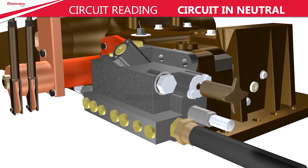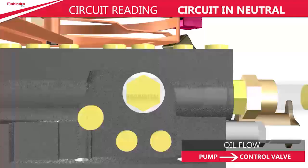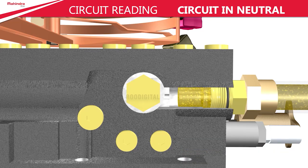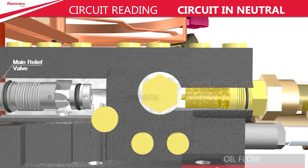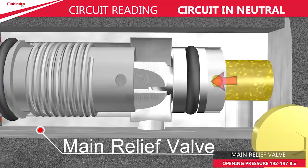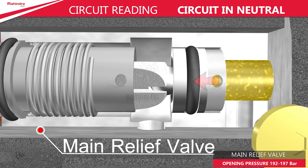In this circuit, the oil starts to flow from the pump to the control valve with negligible pressure. Further, it enters the control valve where it travels towards the main relief valve bore, and keeps traveling until it reaches the pressure relief valve. The operating pressure for the main relief valve is about 192 to 197 bar.